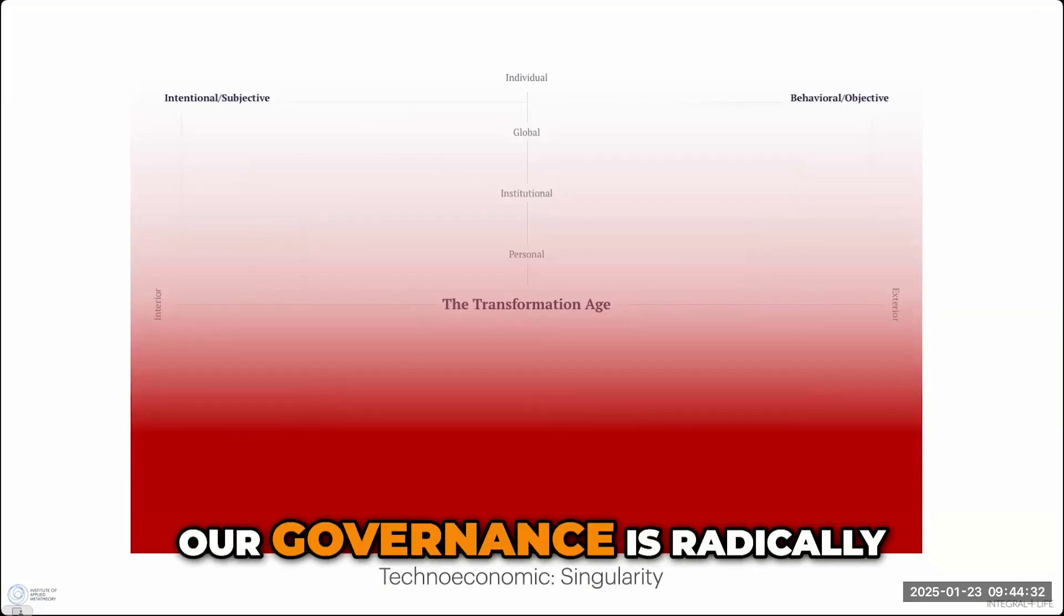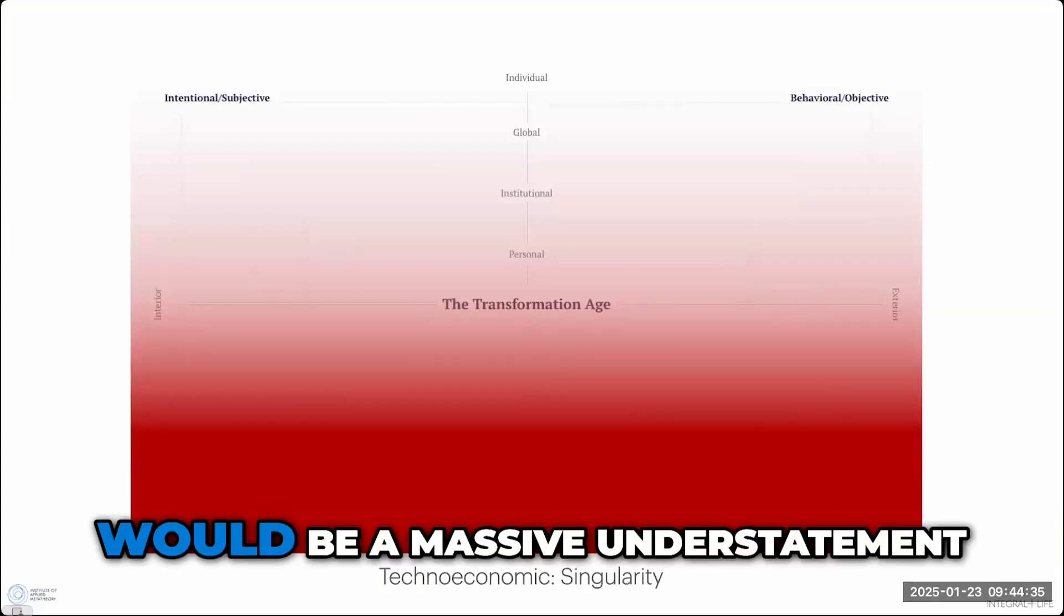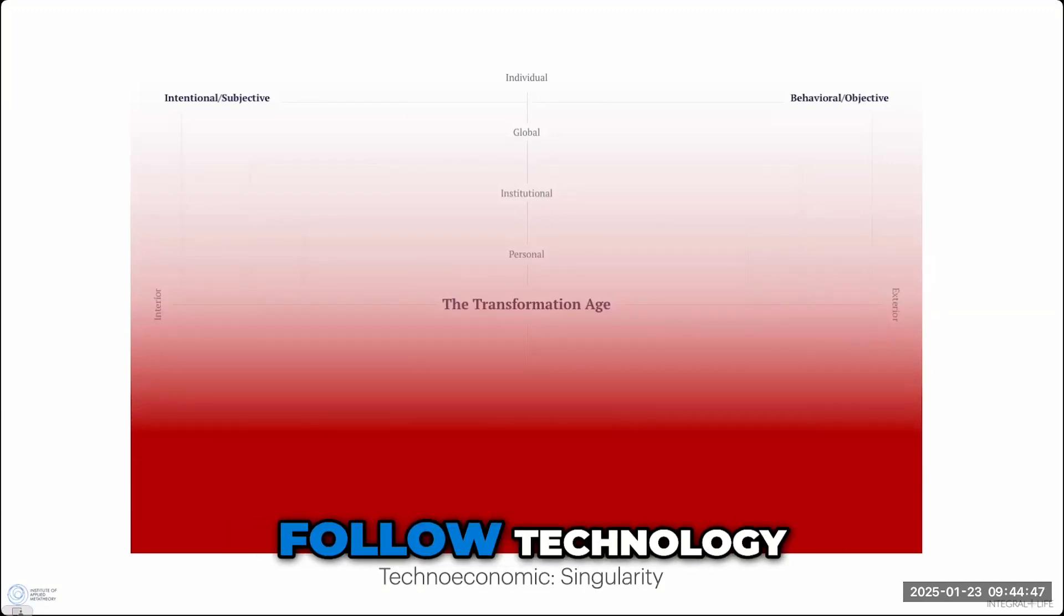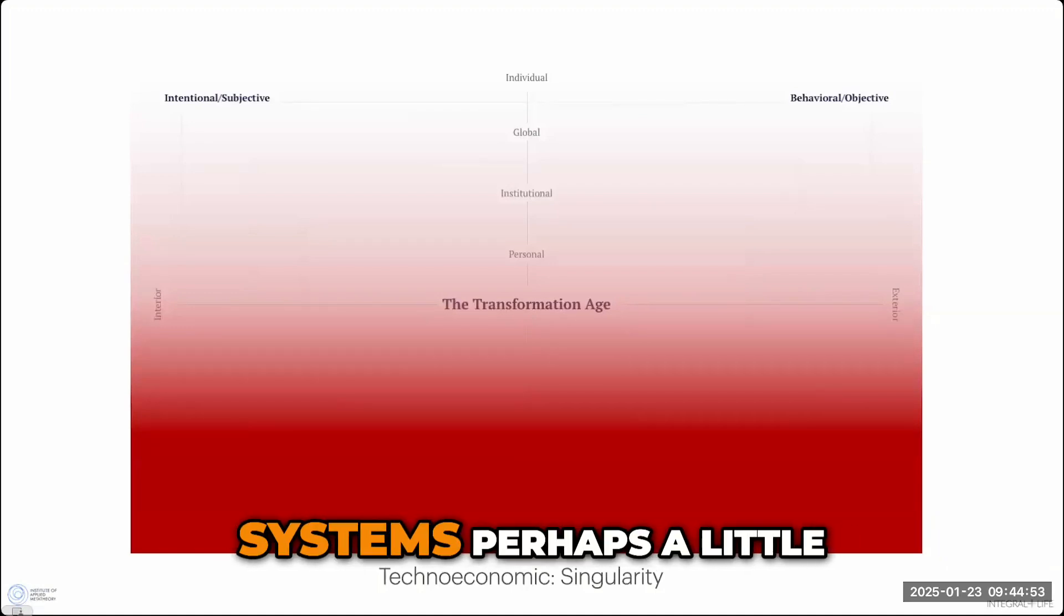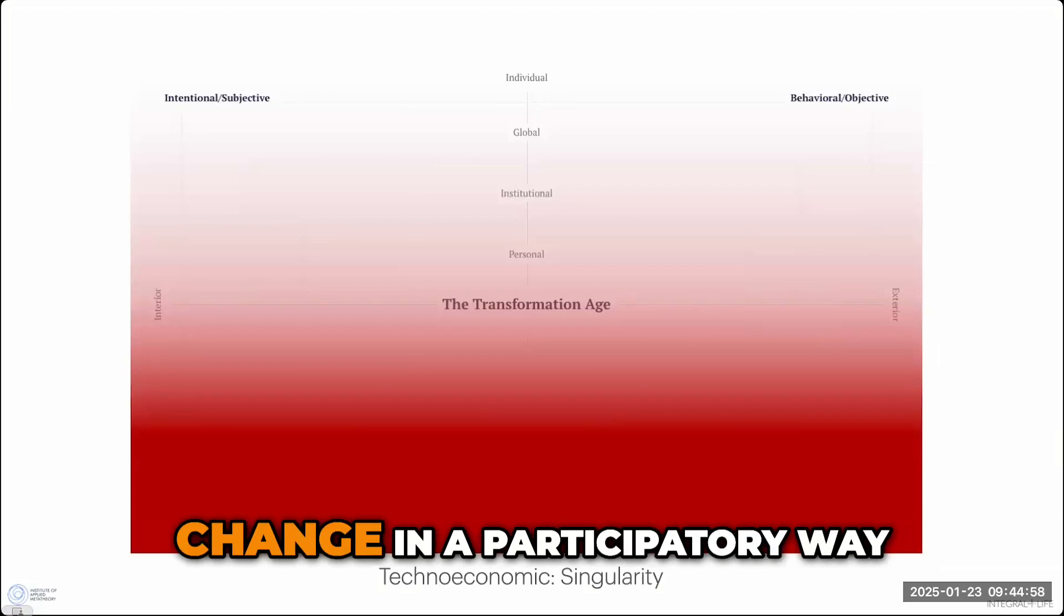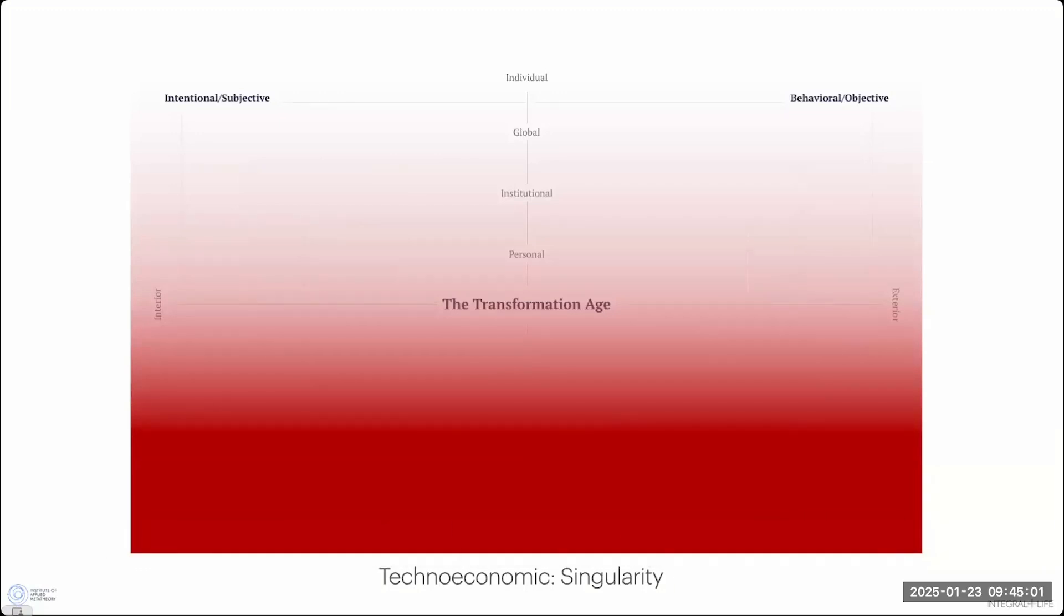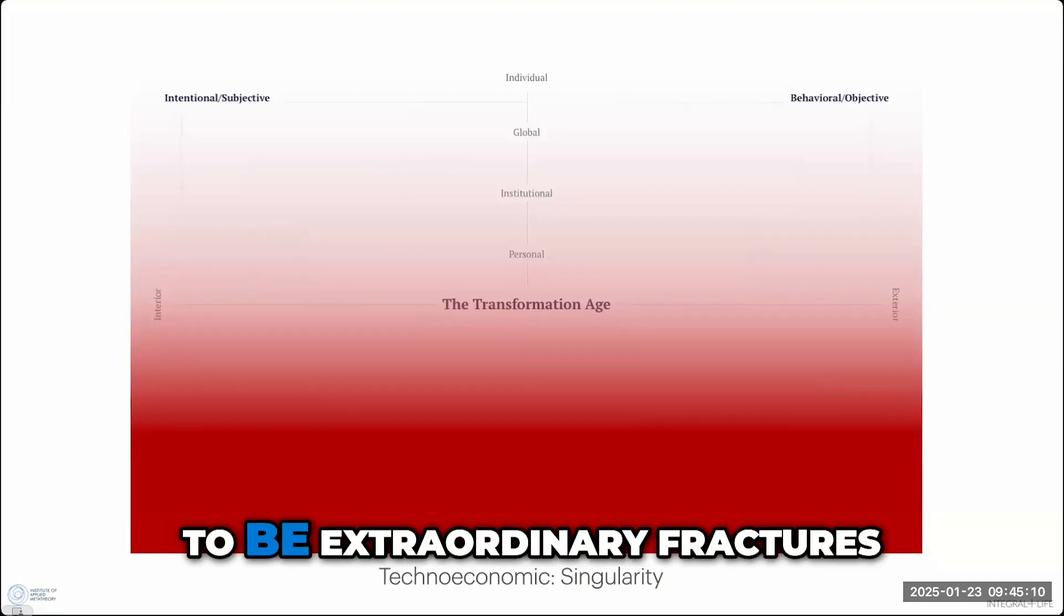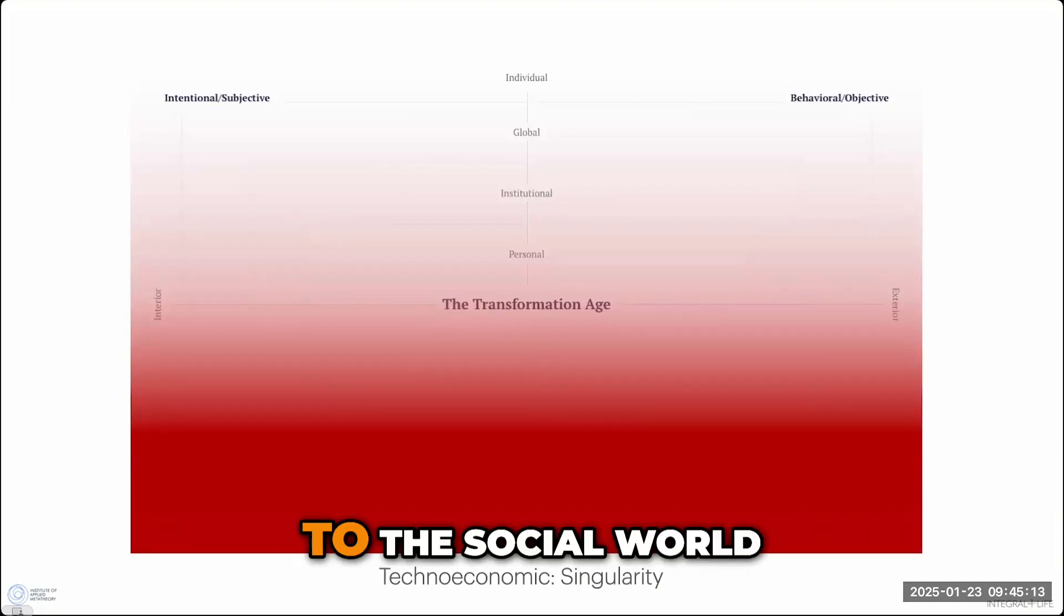But to say that our governance is radically ill-prepared for it would be a massive understatement. We are simply—and maybe it is always the case that governance has to follow technology, it tends to historically—but you would like to see our governance systems perhaps a little better prepared at metabolizing change in a participatory way than what we seem to demonstrate ourselves capable of. Because these are going to be extraordinary fractures to the social world.